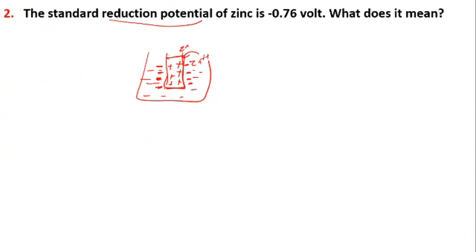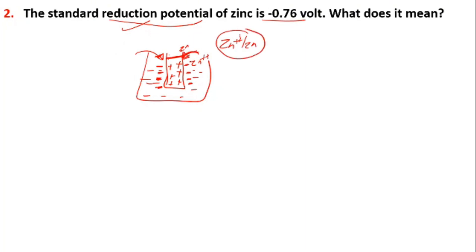This is the electrode potential. For example, we have a reduction potential. This is the oxidation potential difference developed. The reduction potential of zinc is minus 0.76 volts. Zinc²⁺ is reduced to zinc, so the potential difference develops.